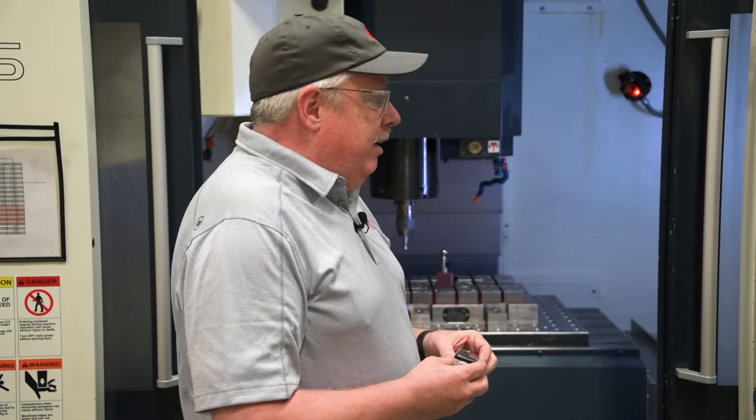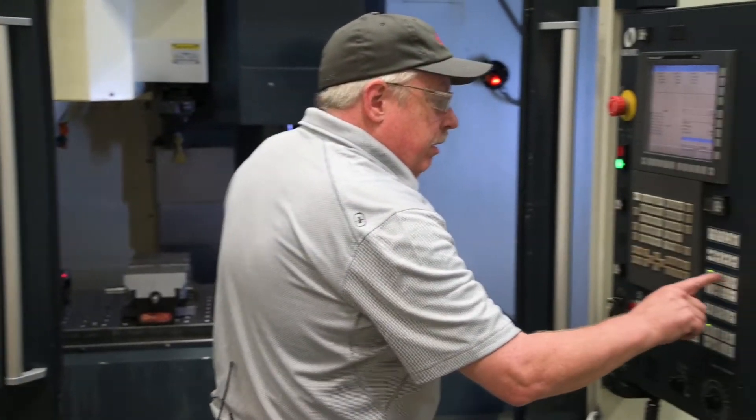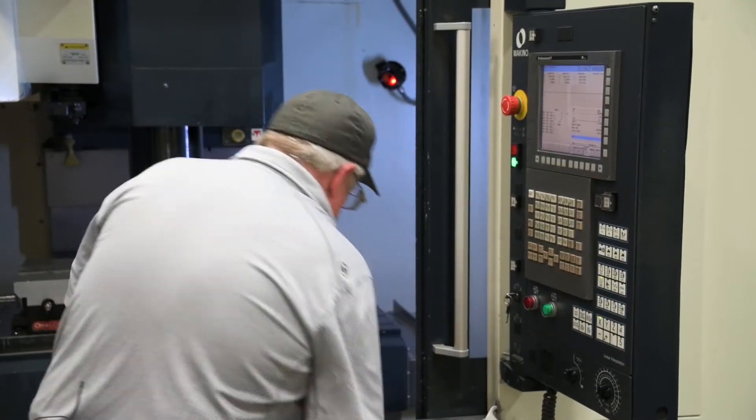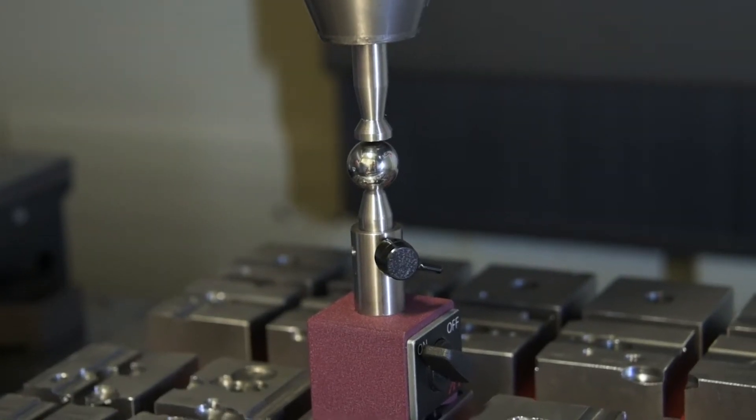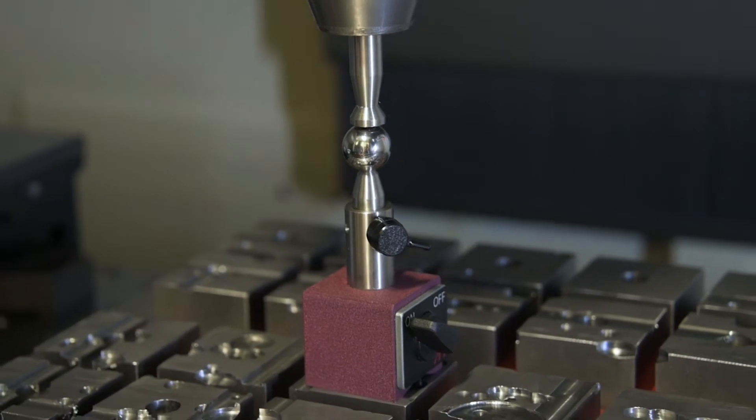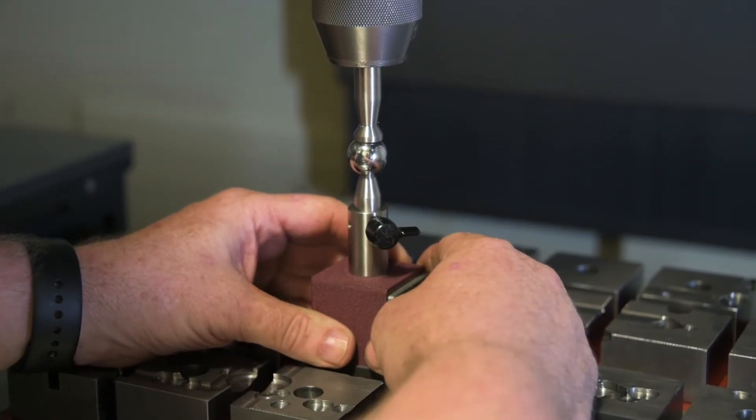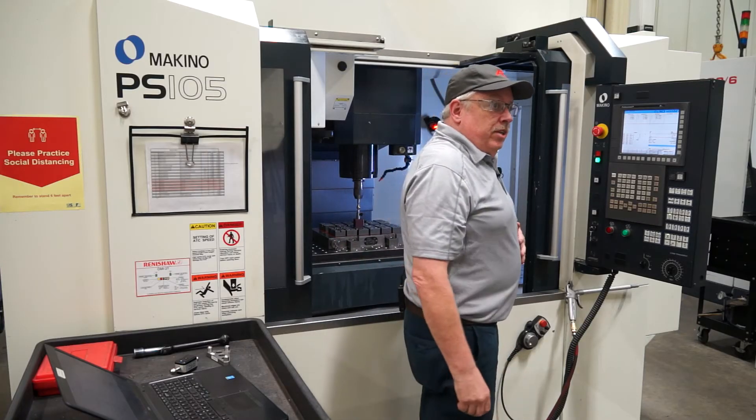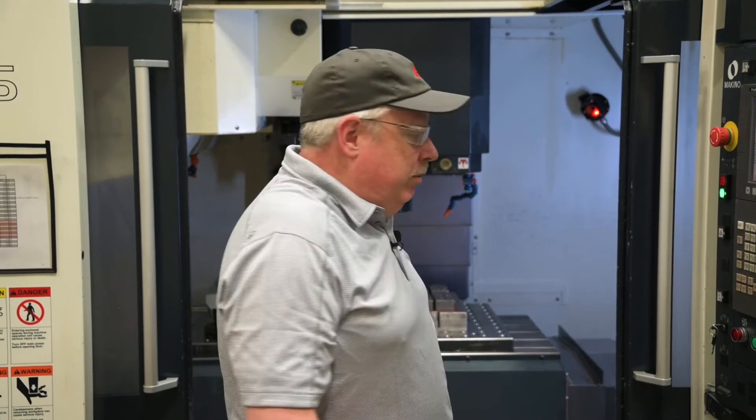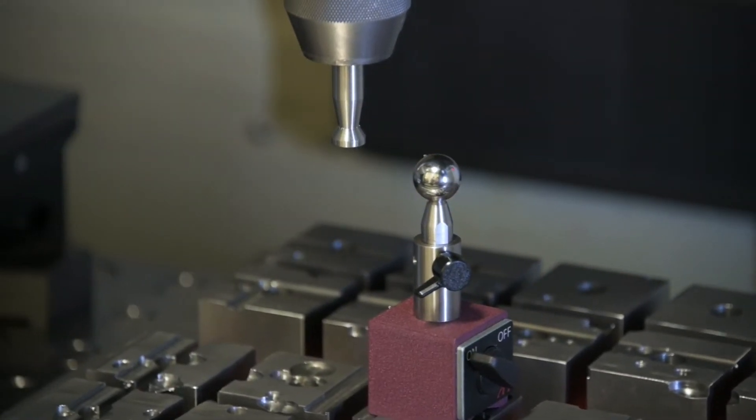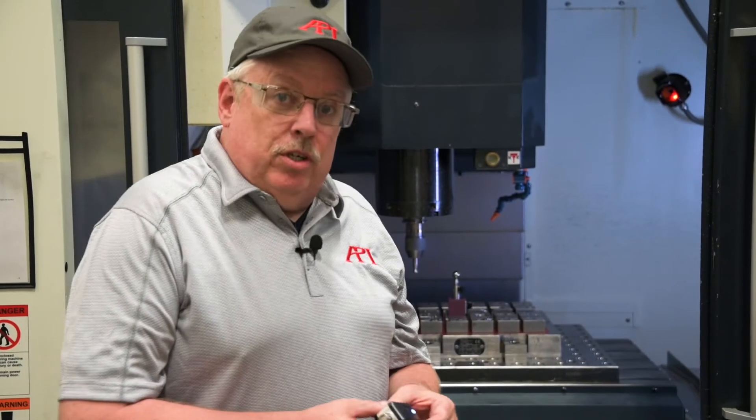Today we're going to run the XY. So first I have to line up the ball and the cone. Once that gets locked in place, if your program is written right, you should just be able to start it and go. Once the machine stops at just the right spot, you're able to load the ball bar in.